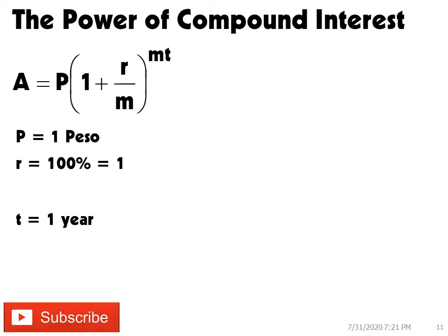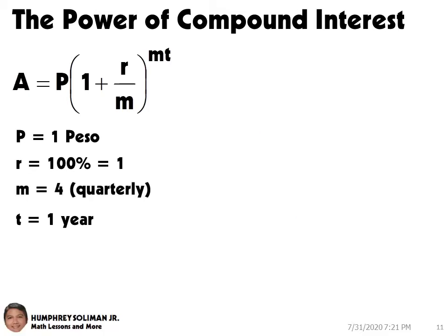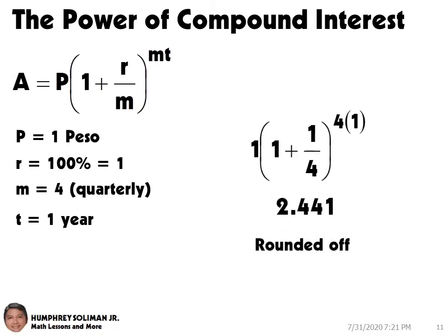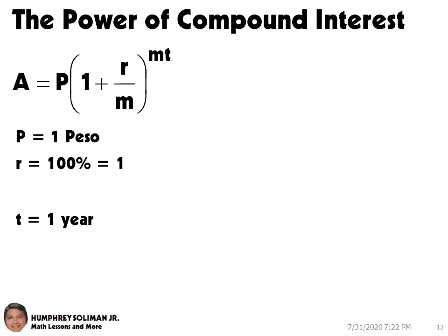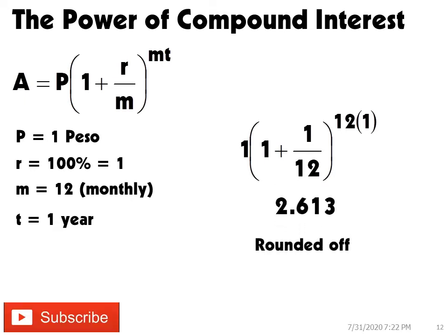Let's keep going. Suppose the bank offered compounding the interest quarterly, the M will be equal to 4. You will have 2.441 times your initial investment after 1 year, rounded off to 3 decimal places. If the bank offered compounding the interest monthly, the M will be equal to 12, you will have 2.613.